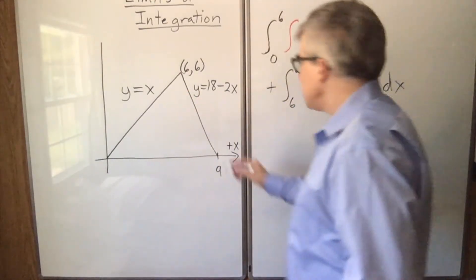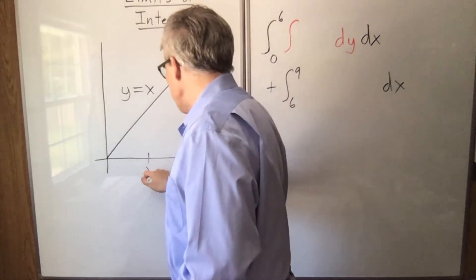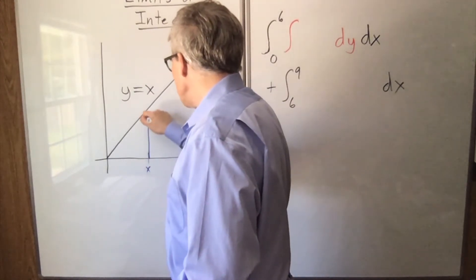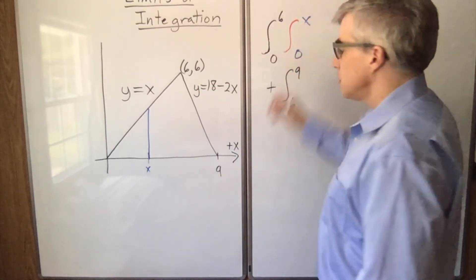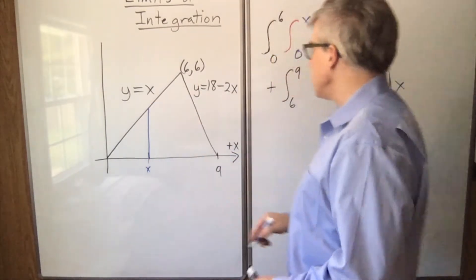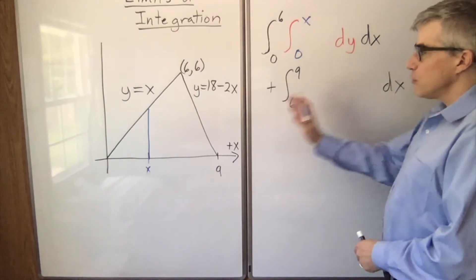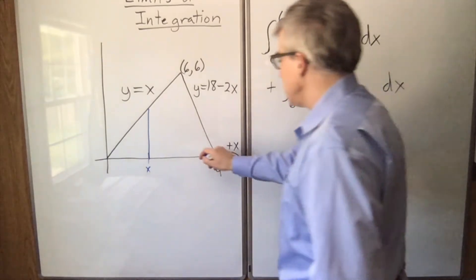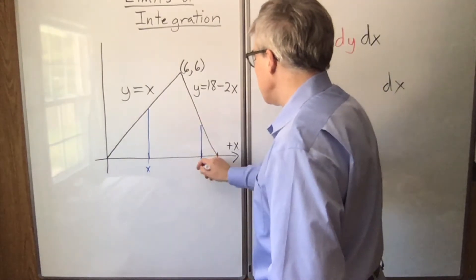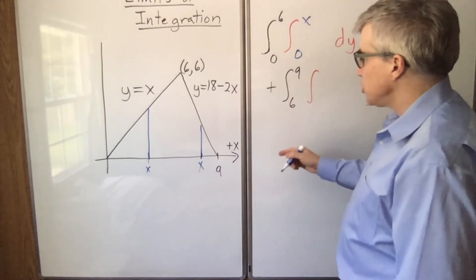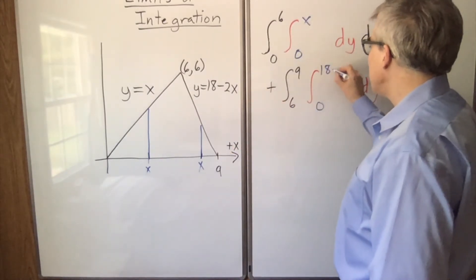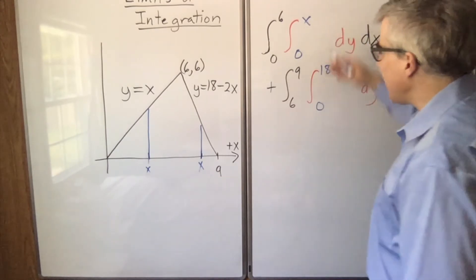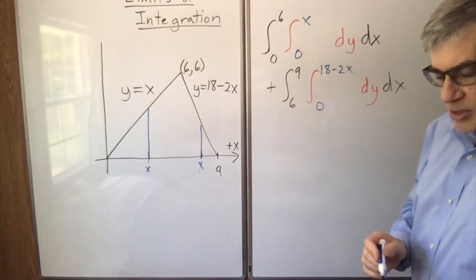Because if we are in the first piece somewhere over here, then y is going to range from 0 to x, because that's the low value and the high value. On the other hand, if we're past the point 6 and we pick an x over here, y is ranging from 0 up to 18 minus 2x. So we have to add both of those integrals together to get the area.